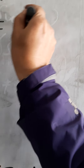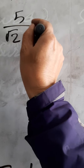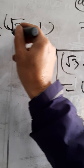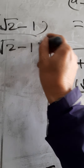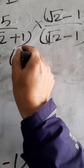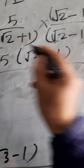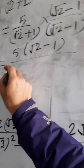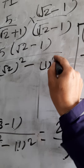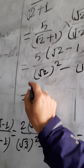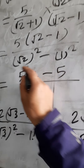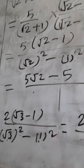This is 5 by root 2 plus 1, into root 2 minus 1, over root 2 minus 1. Now what do we do? 5 into root 2 minus 1 is equal to A plus B into A minus B equal to A square minus B square, 1 squared. Now this is 5 root 2 minus 1, and 5 minus 2 is equal to root 2.